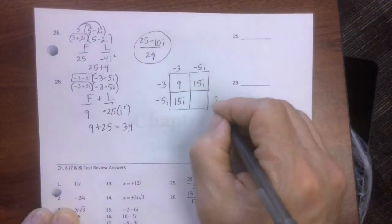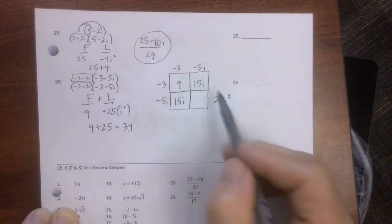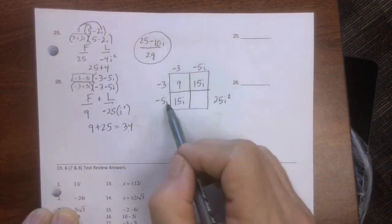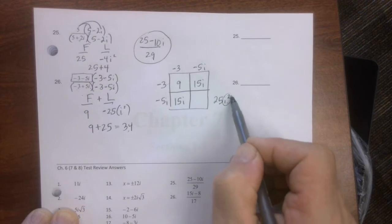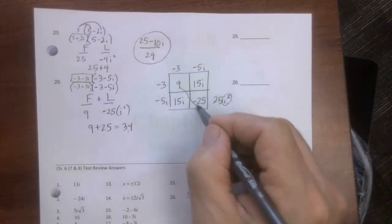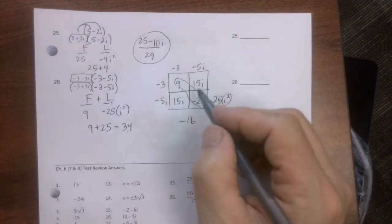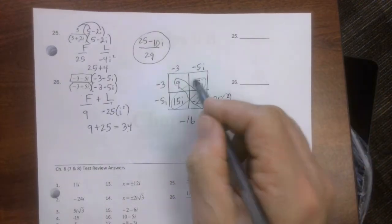Over here, I like to put it over the side so I don't make a silly mistake. Negative 5 times negative 5 gives me 25. i times i is i squared. This is negative 1. So that would be negative 25. If I add these like terms together, I get negative 16. If I add these together, I get 30i.